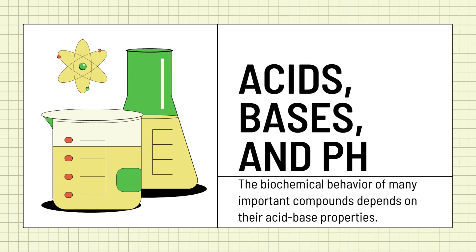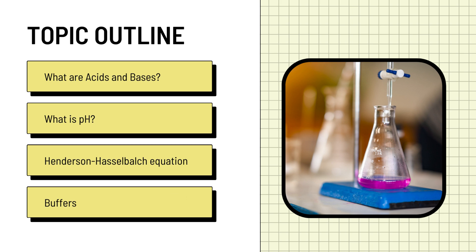The biochemical behavior of many important compounds depends on their acid or base properties, and that includes biomolecules. The way biomolecules produce polymers based on different factors, and one factor that affects the way they form bonds or interact with one another to produce larger biomolecules is whether they are acid, base, or if they have neutral pH. In this lesson, we're going to talk about the definition and concept of acids and bases, and at the same time, define what pH is all about.